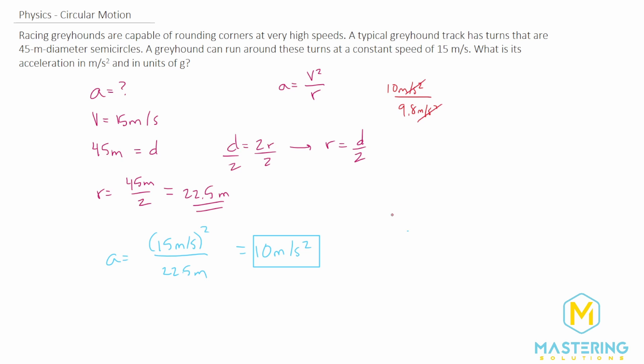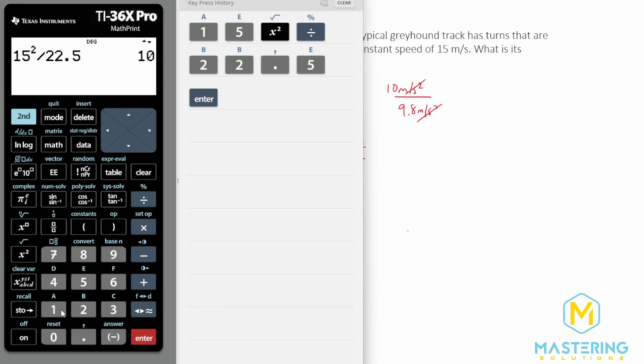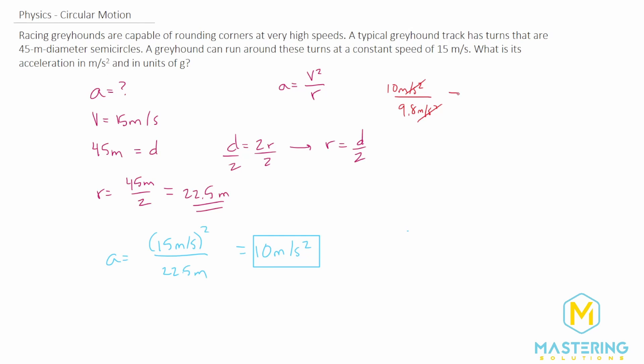And 10 divided by 9.8 is rounded to 1. So they're taking the turn at 1 g, or 10 meters per second squared.